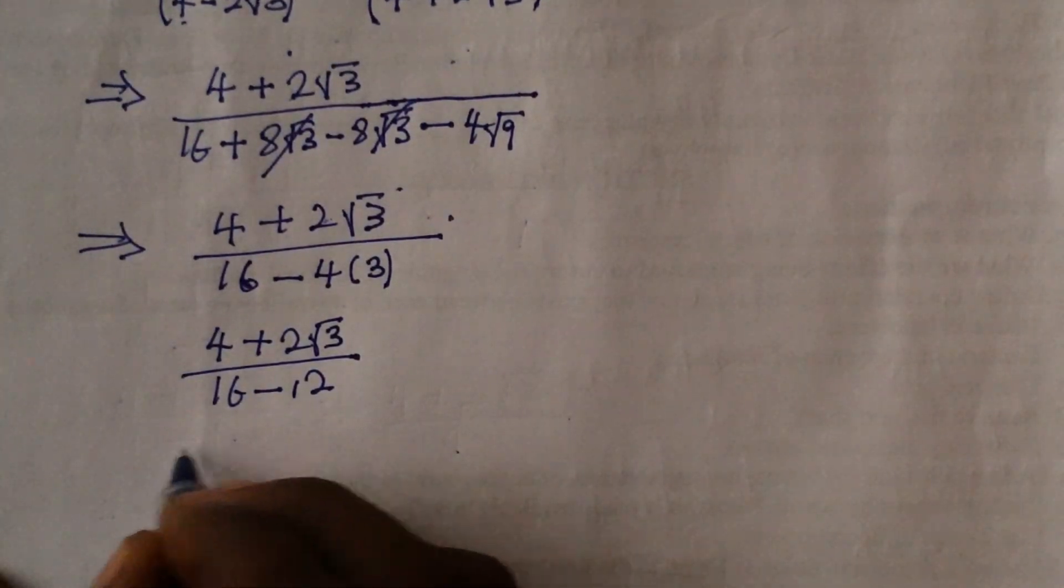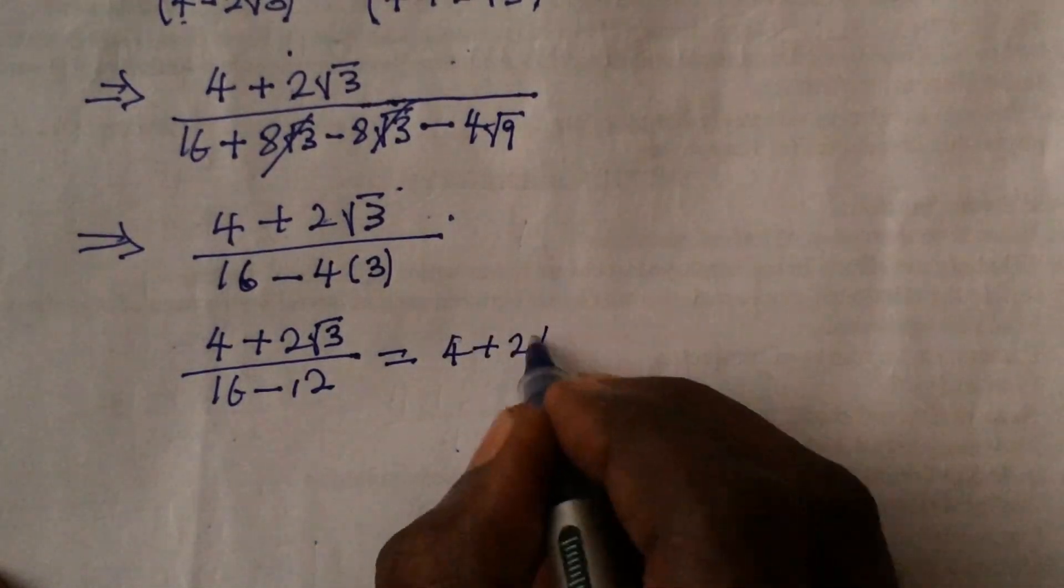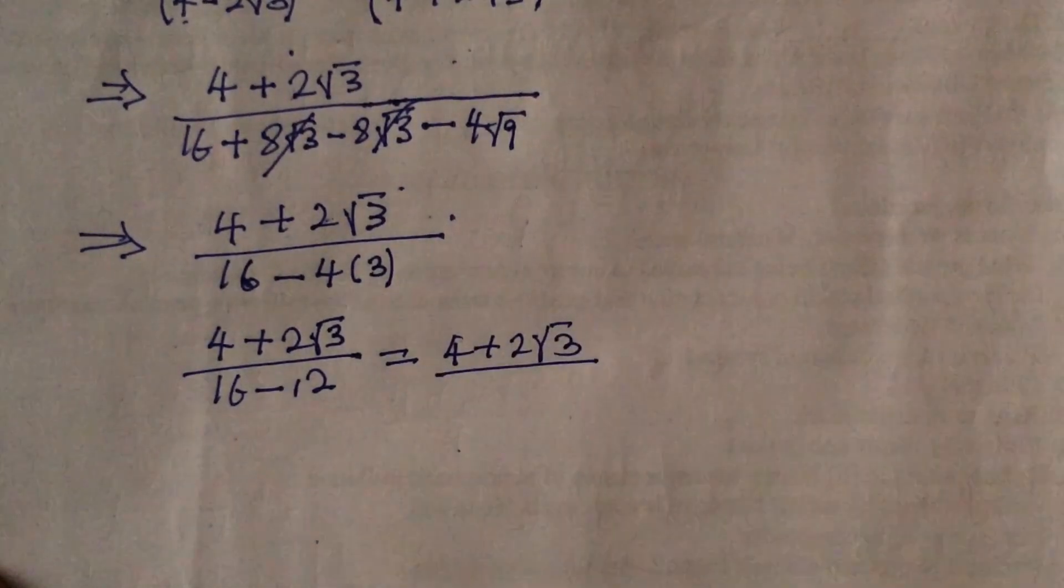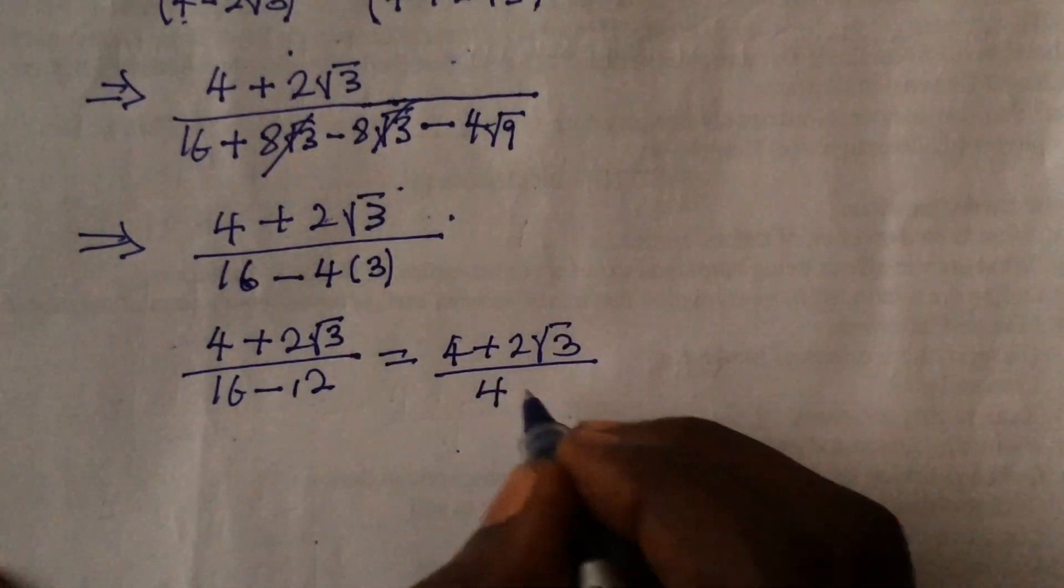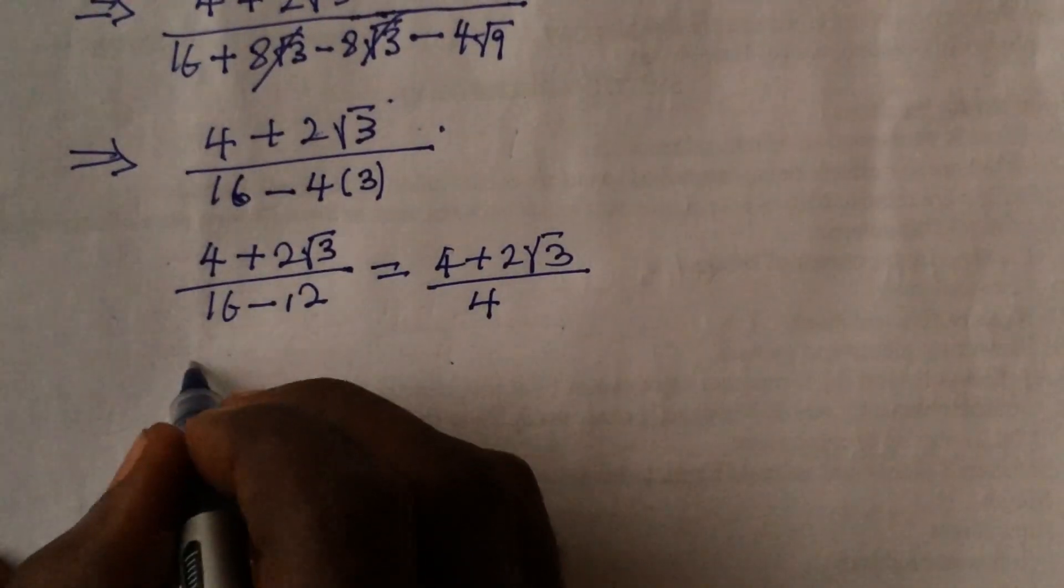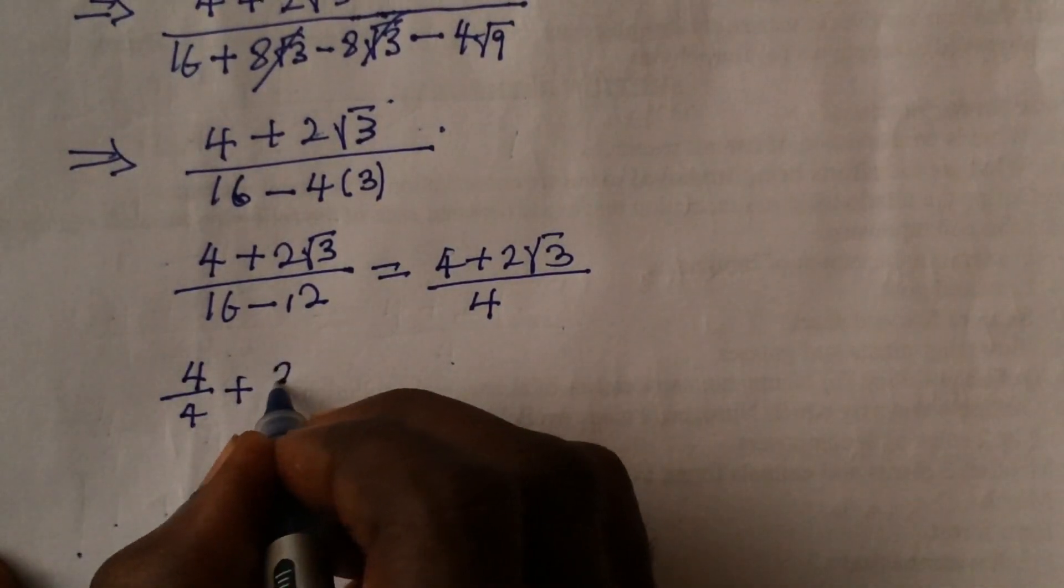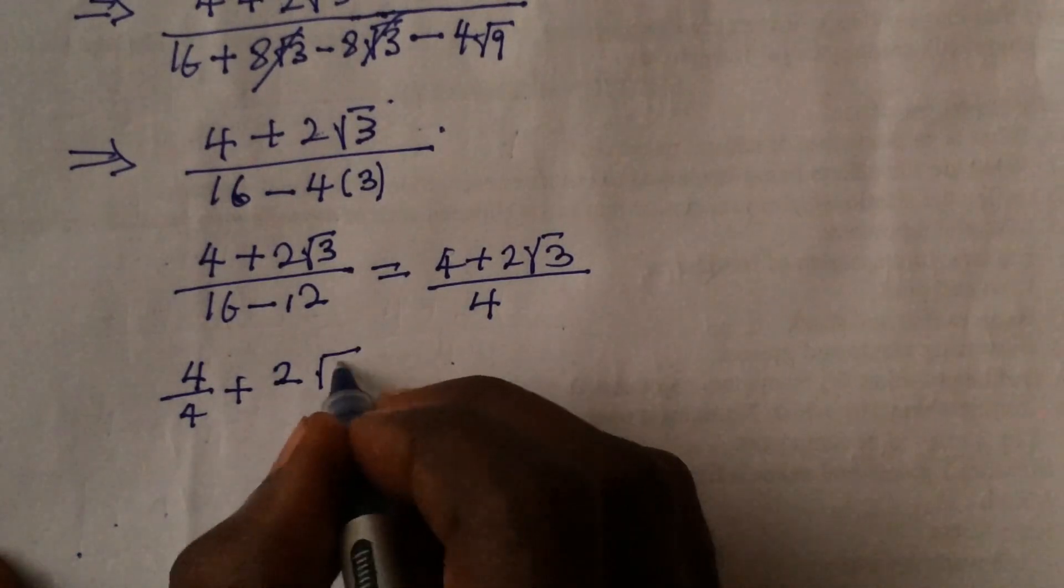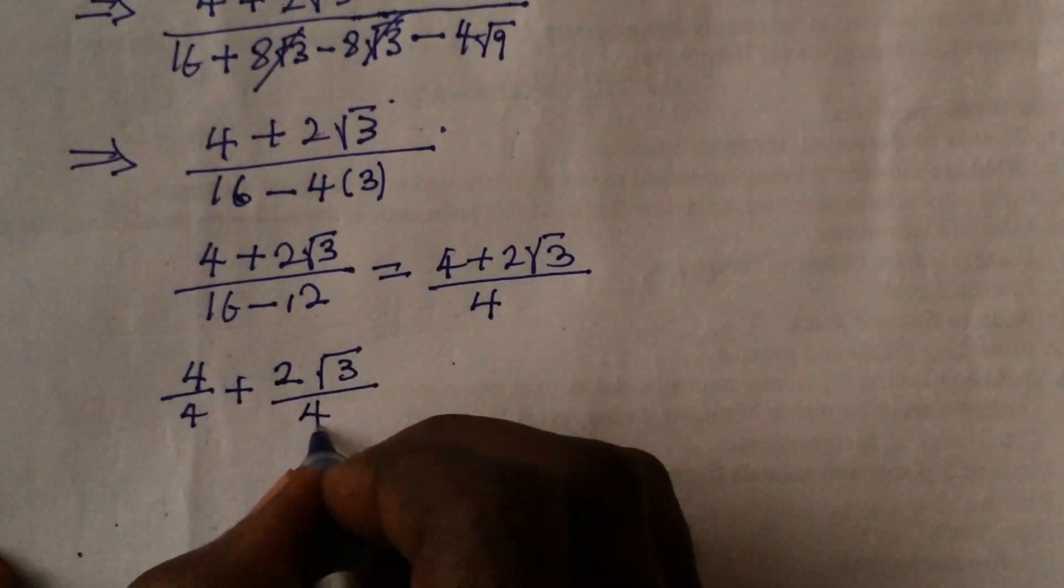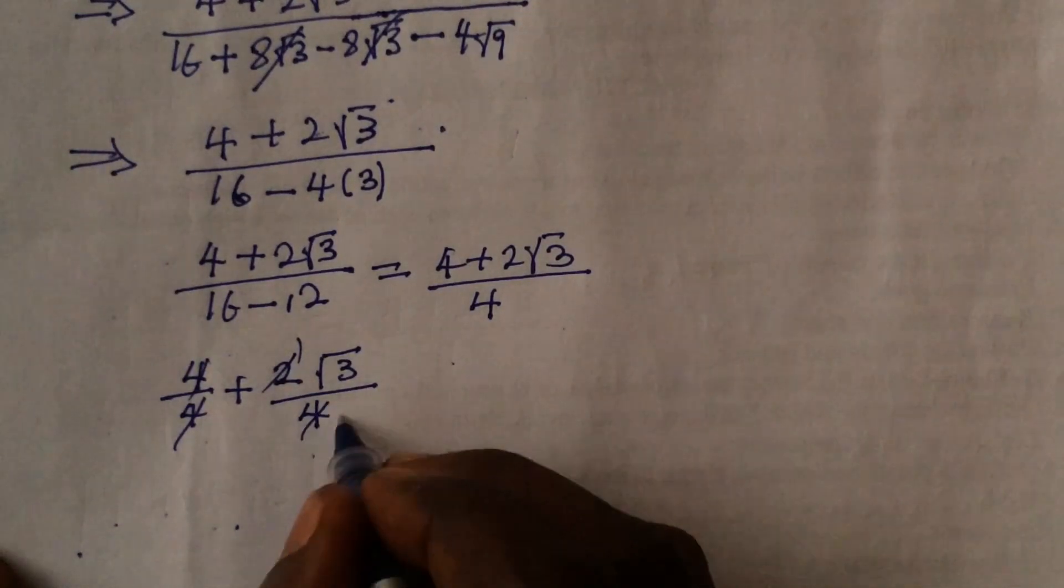So we have 4 plus 2 root 3 over 4. We can simplify: 4 over 4 gives 1, and 2 root 3 over 4 gives 1/2 root 3. So our final answer is 1 plus 1/2 root 3.